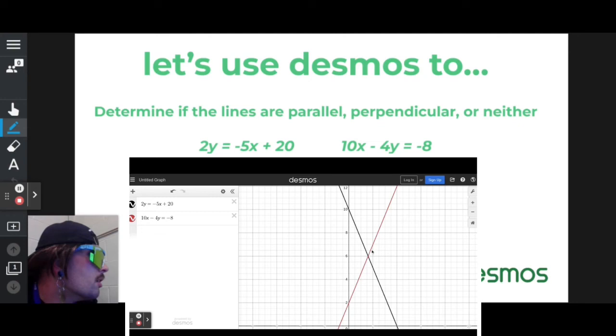But when they do intersect, they do not form 90 degree angles. So they do intersect, but they are not perpendicular. So the answer to this one is neither.